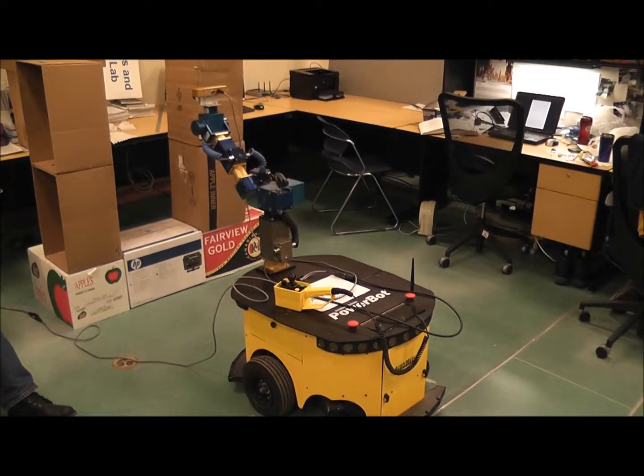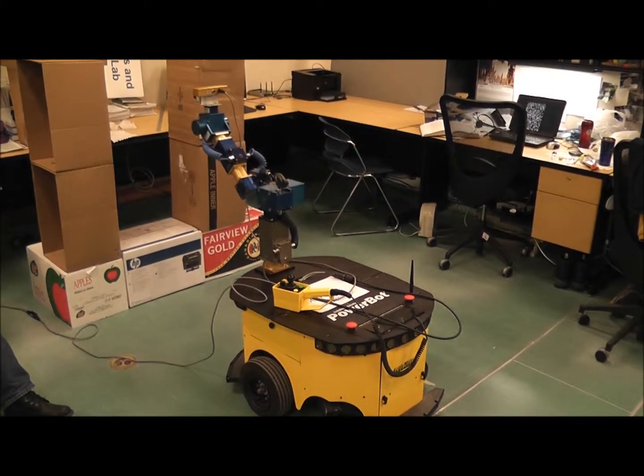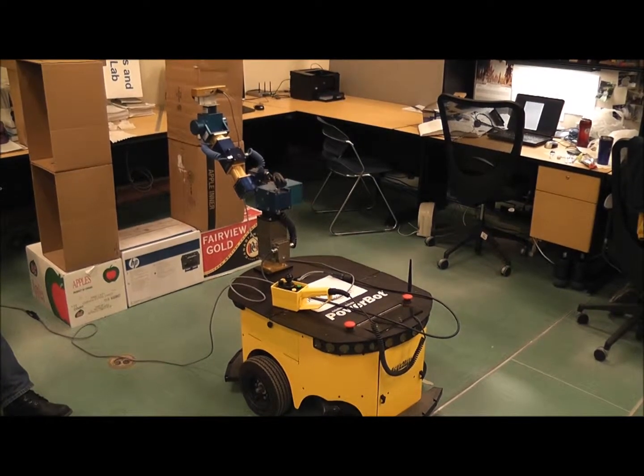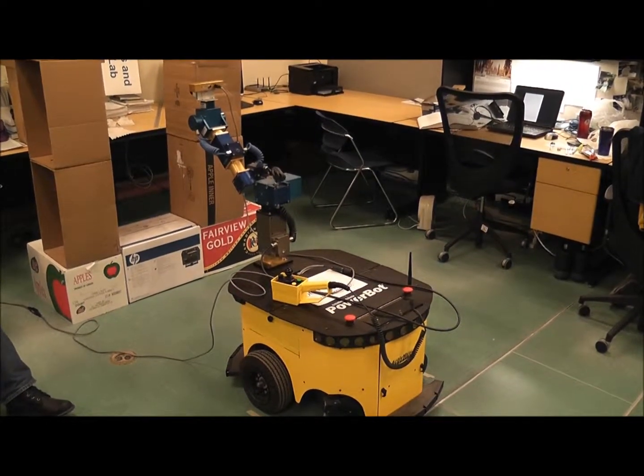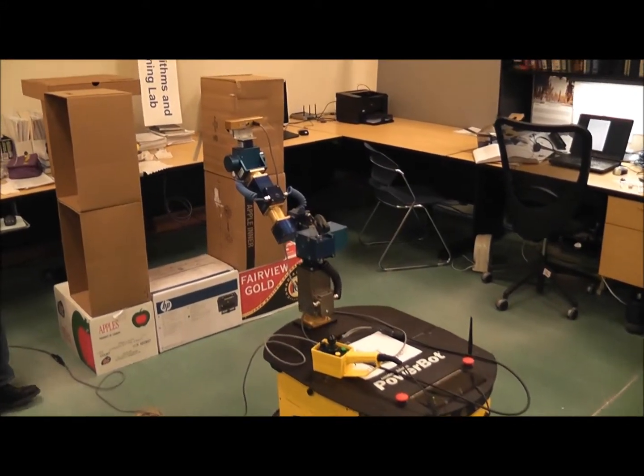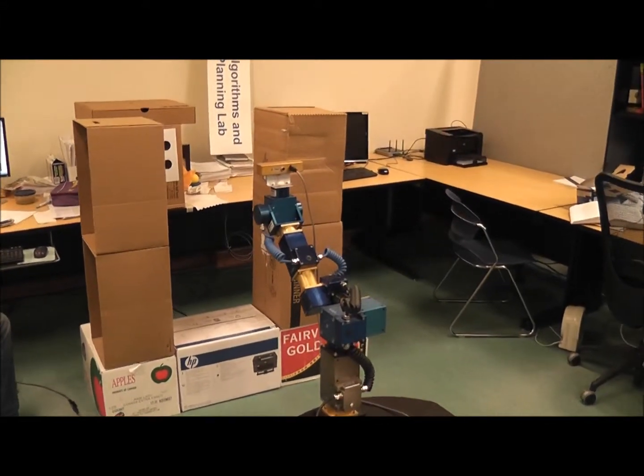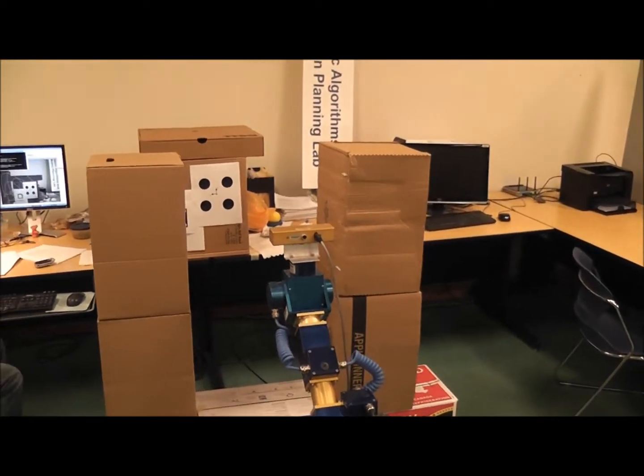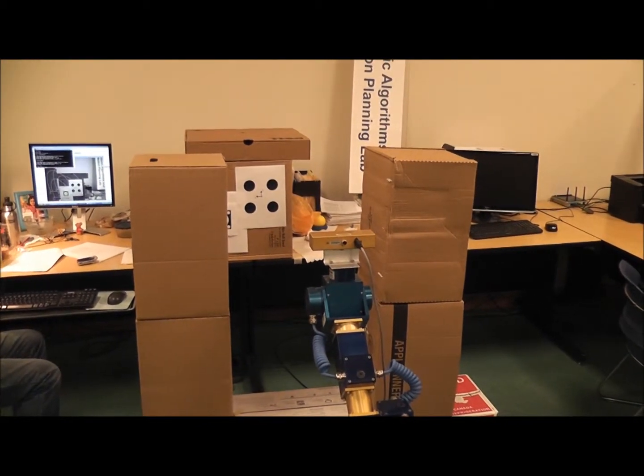This is an experiment demonstrating kinodynamic planning with visual surveying for a mobile manipulator with non-holonomic constraints. At the end, the camera will be within these two boxes, and these are the features that the camera will follow.